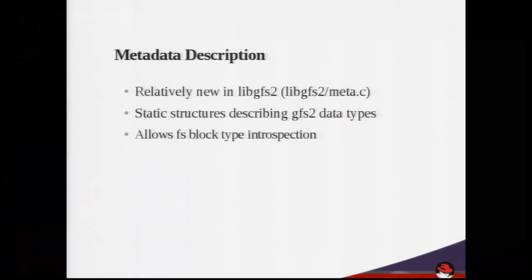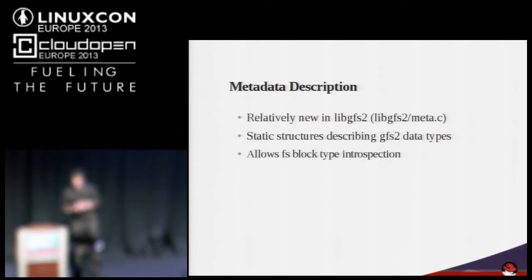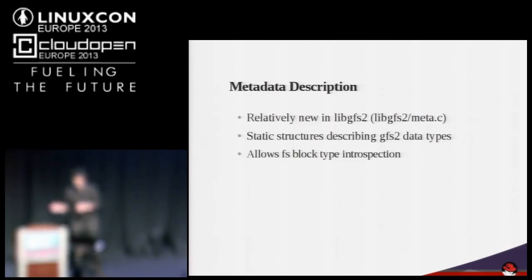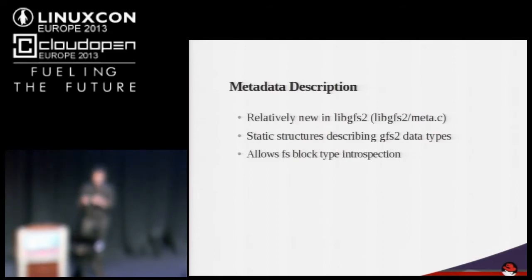So as a solution, a couple of years ago Steve added a meta.c file to libgfs2 which contains static arrays of structures describing the actual data types used in a GFS2 file system — essentially a description of all the data types inside linux/gfs2_ondisk.h. That allows you to read an arbitrary file system block, look at its type, cross-reference it with the metadata description, and get a structure with all the field types, sizes, and their offsets. That kind of allows you to use the block as you would an object in a dynamic language.